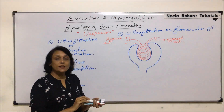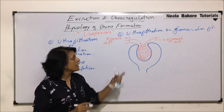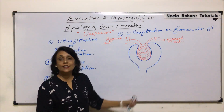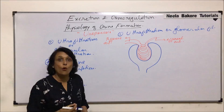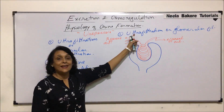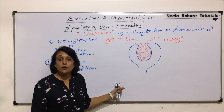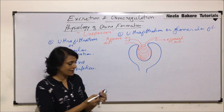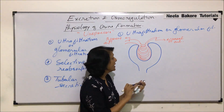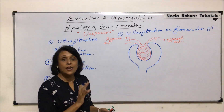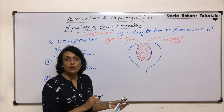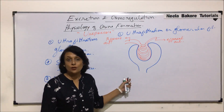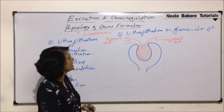The diameter of the afferent arteriole is more compared to the efferent arteriole, and that is why the pressure in the capillaries of the glomerulus is double that of any normal capillary. The filtration taking place under this pressure is known as ultrafiltration.